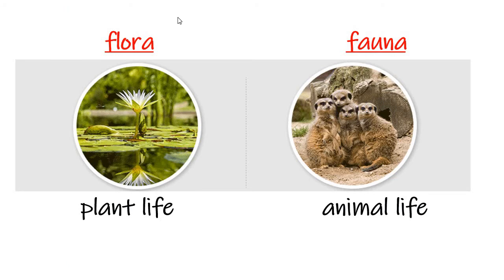Underneath in your notes, there is vocabulary you'll need throughout this unit. Your first word is flora, f-l-o-r-a. Flora refers to the plant life found in a specific biome — easy to remember because it contains the word 'flora.' The other type of life found in a biome is fauna, f-a-u-n-a, which refers to all the animals found within a biome.